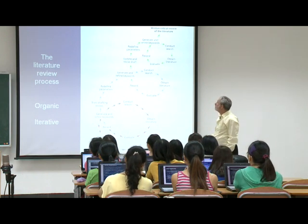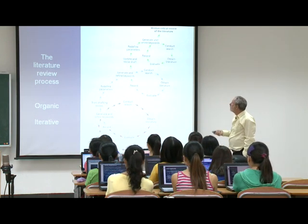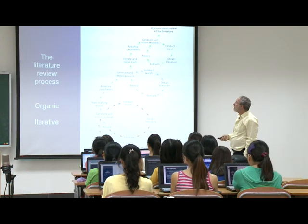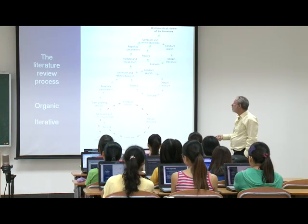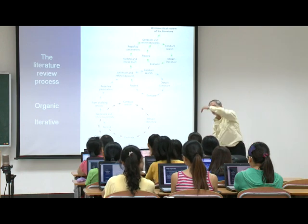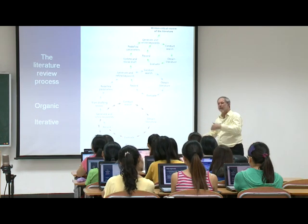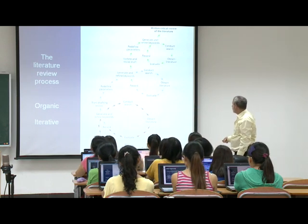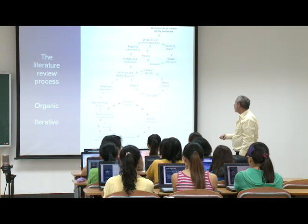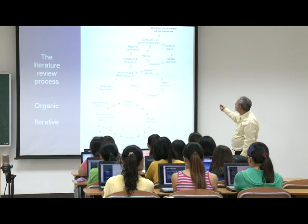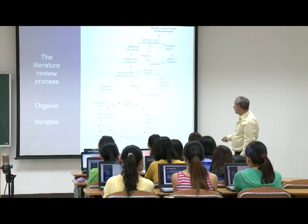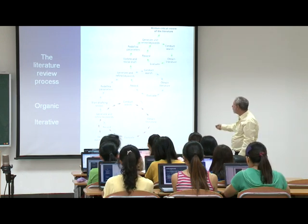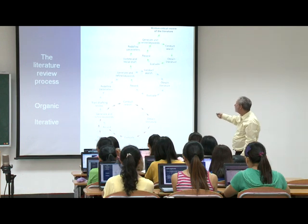There's an example from a textbook showing the literature review process — it's organic and iterative. Iterative means you keep turning around and coming at the same thing again and again. You do something, go somewhere else, come around, and then you're back where you started. Starting with research questions and objectives, the task is to write a critical review of the literature — you keep drafting, keep finding material, keep generating ideas, and so it goes on until you end up with the product.